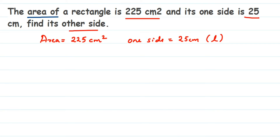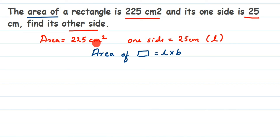Now we're going to find out the other side. We know the area from the question, so we'll use it. Area of rectangle equals length into breadth. Substituting what we know: 225 centimeter square equals 25 centimeter multiplied by breadth. The length is 25, and the other side is what we need to find.